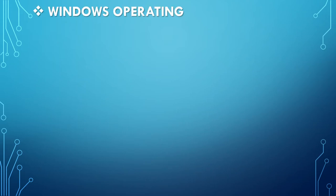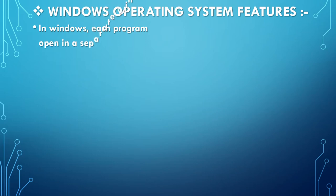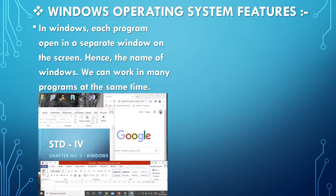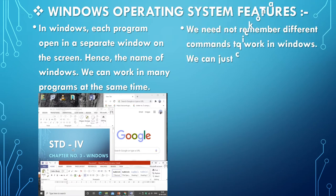Windows Operating System Features: In Windows, each program opens in a separate window on the screen — hence the name Windows. We can work in many programs at the same time. We need not remember different commands to work in Windows. We can just click on a tool, command, or its icon on Windows.